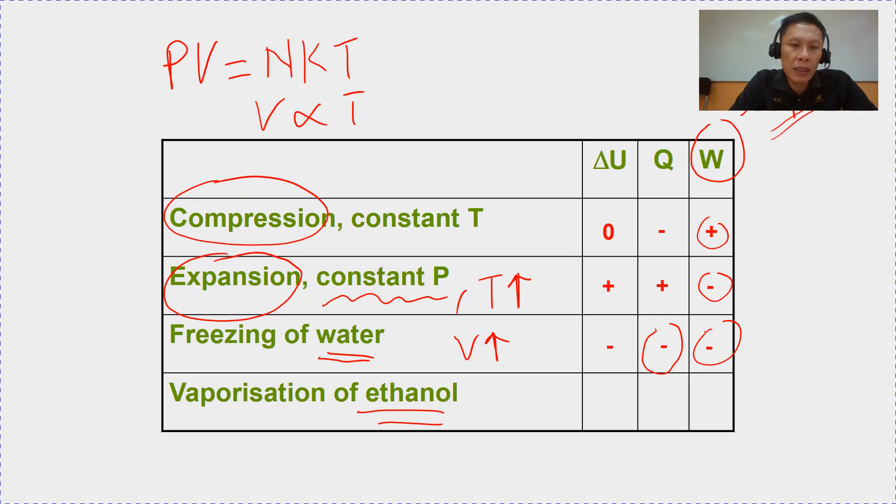When ethanol, lastly, when ethanol changes from liquid to gaseous state, vaporization, volume also increases. So, with the negative sign in front, work done on must be negative. When you want to boil something, the heat must be supplied to the system. So, positive for heat supplied. And, if you look at first law, the only possibility for change in internal energy must be positive.